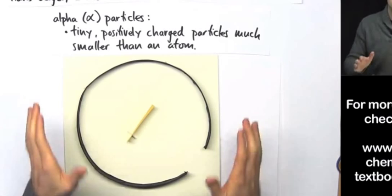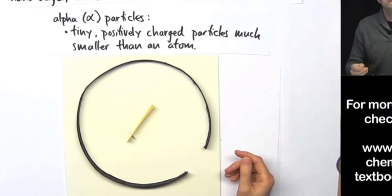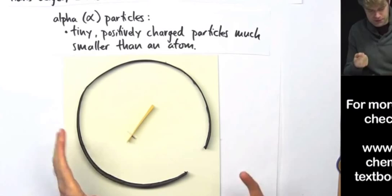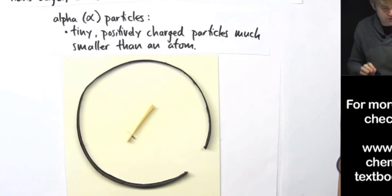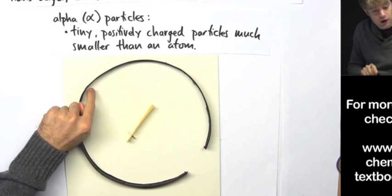Now here's what they see. Most of the time, they shoot alpha particles straight at the gold foil, and they see flashes right here behind the gold foil.